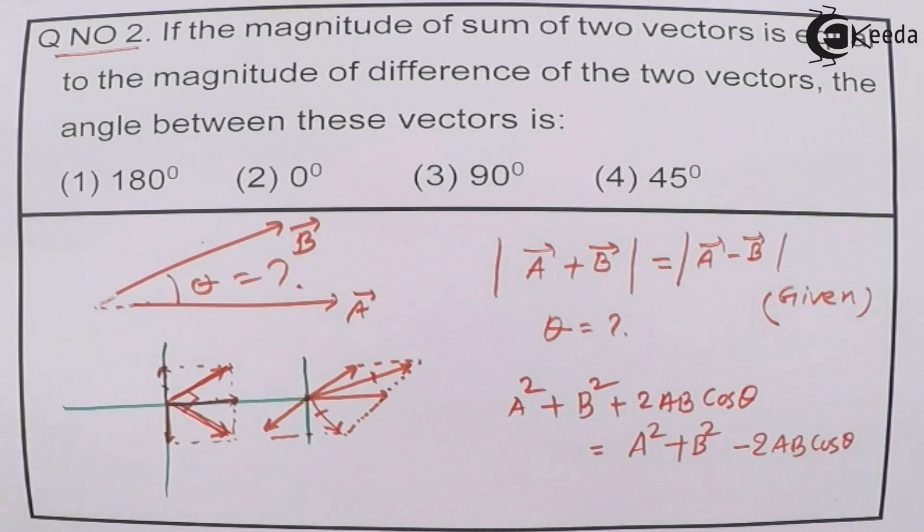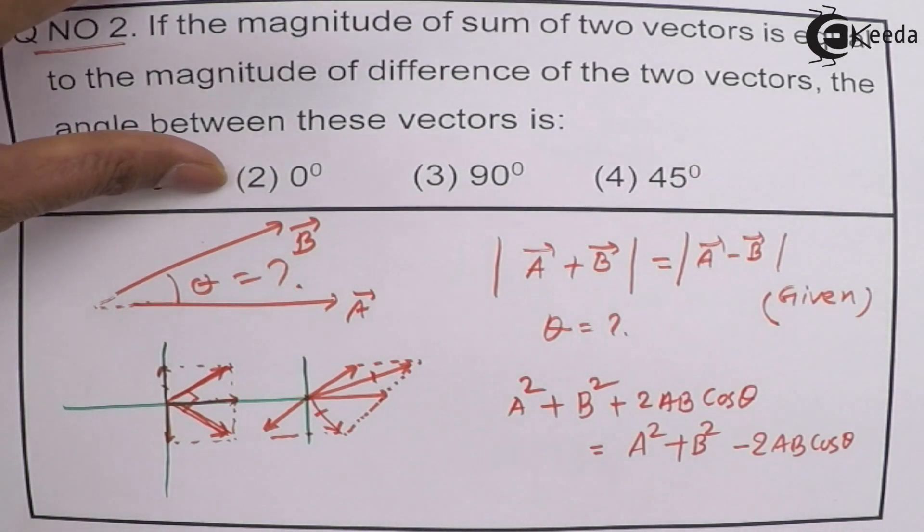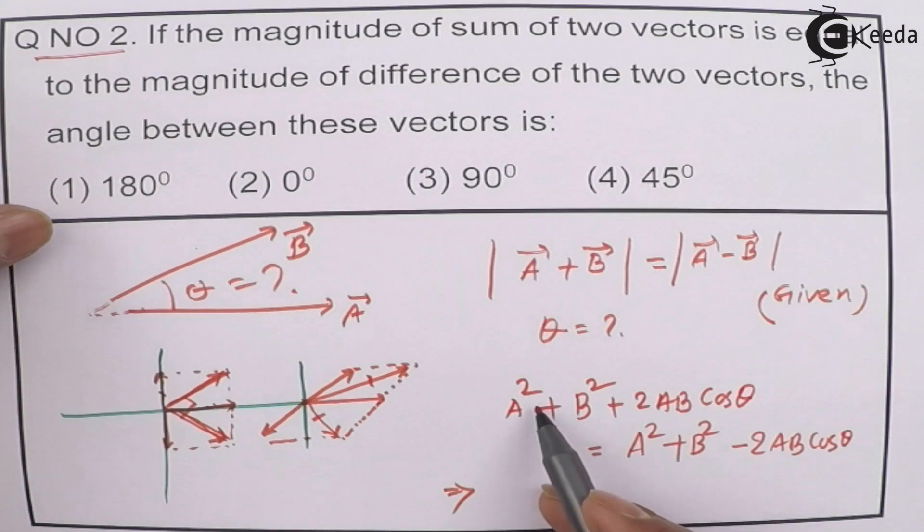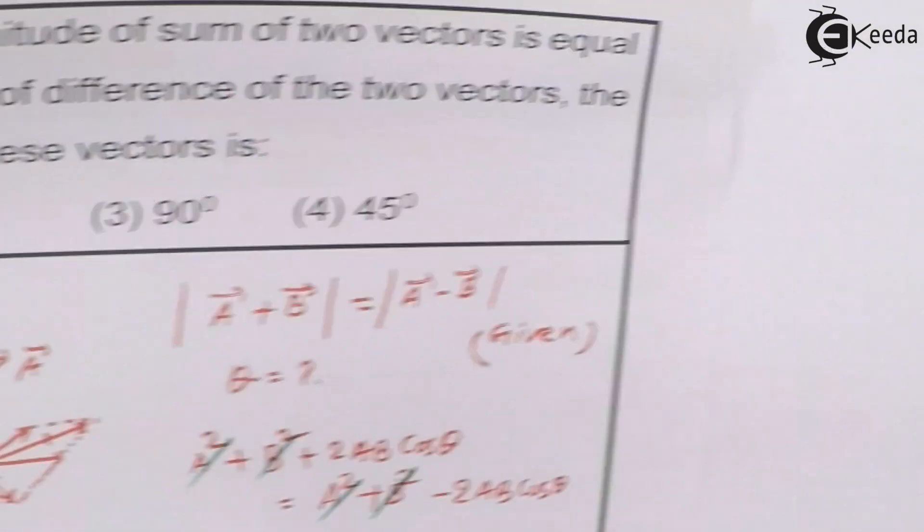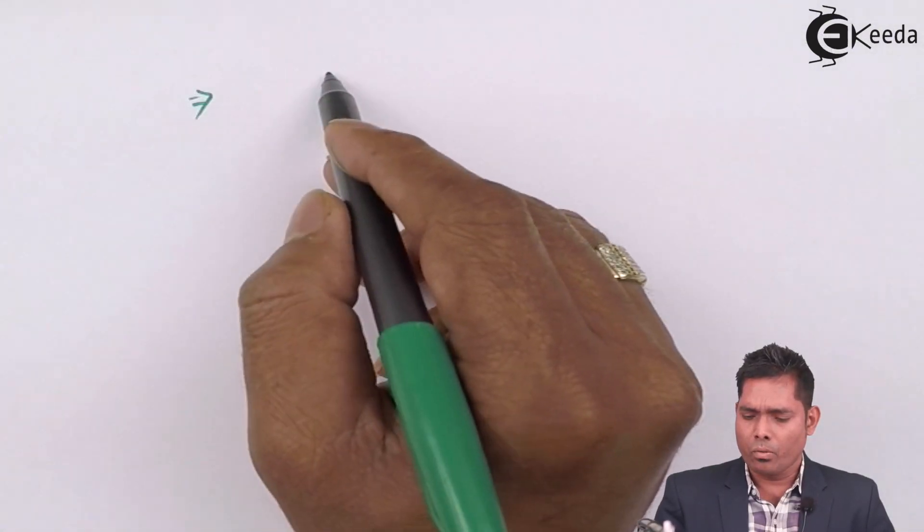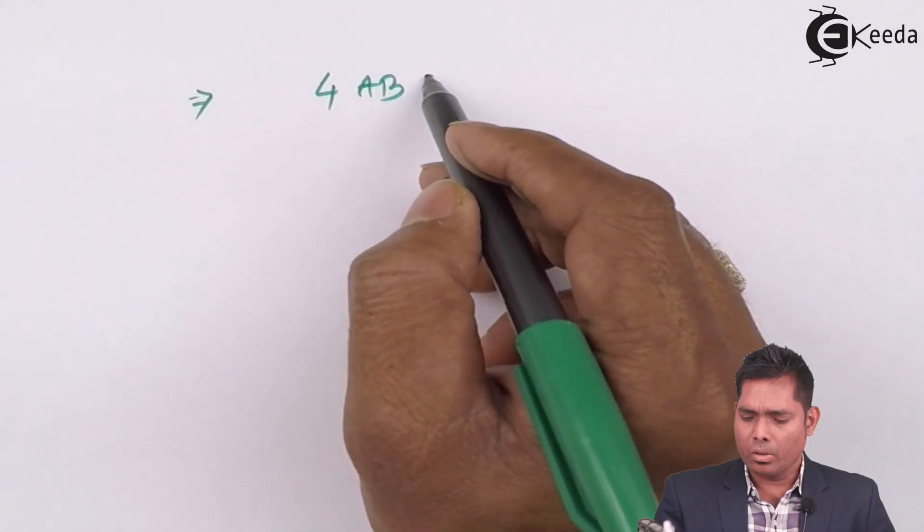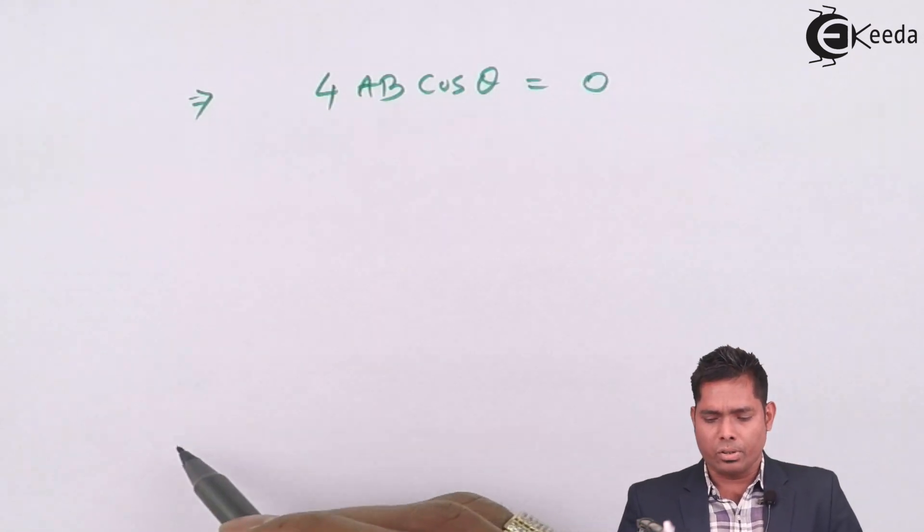If I solve this, I will get, this implies A² plus B² will cancel out from both sides. This one will go to the other side and this will become 4AB cos θ and this side will be zero.